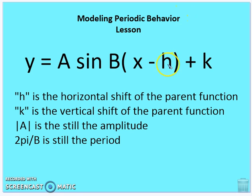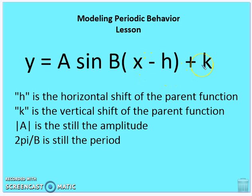So h represents the horizontal shift — and remember the sign will be the opposite of the shift direction. If I'm shifting the parent function to the right, the sign will be negative. If I'm shifting to the left, the sign will be positive. And k represents the vertical shift: if I shift the function up, k is positive; down, k is negative.